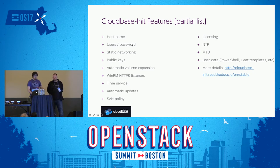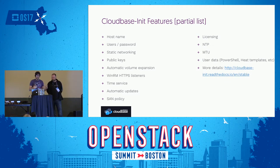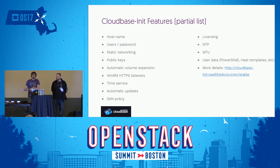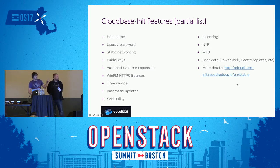CloudBase Init supports: setting hostname, creating usernames and passwords, managing admin password, setting static networking even on Ironic, managing public keys, automatic volume expansion when you boot different flavors, configuring HTTP listeners, configuring the time service, automatic updates, SAN policy, licensing — so you can move your VM from on-prem to cloud and get licensing configured. Also setting NTP services, setting the right MTU for Open vSwitch, and running every type of user data script you might need. There is full documentation available, and this is just scratching the surface of what CloudBase Init can do.